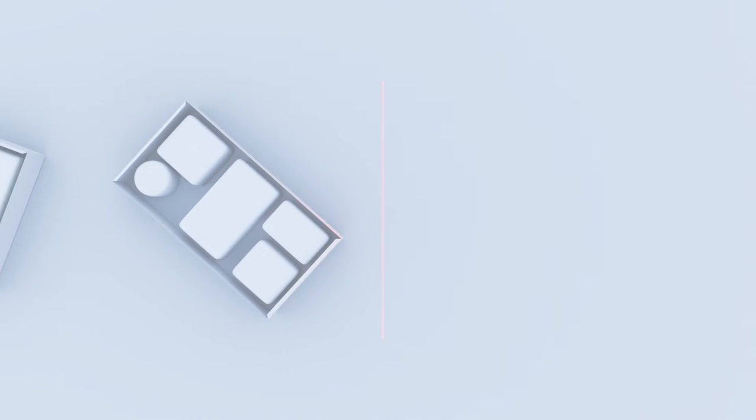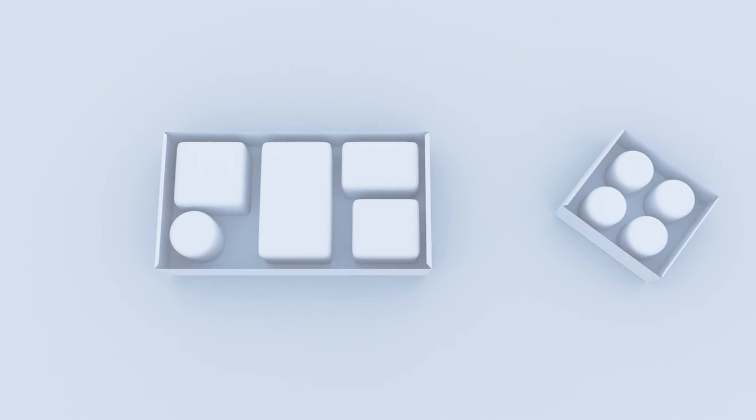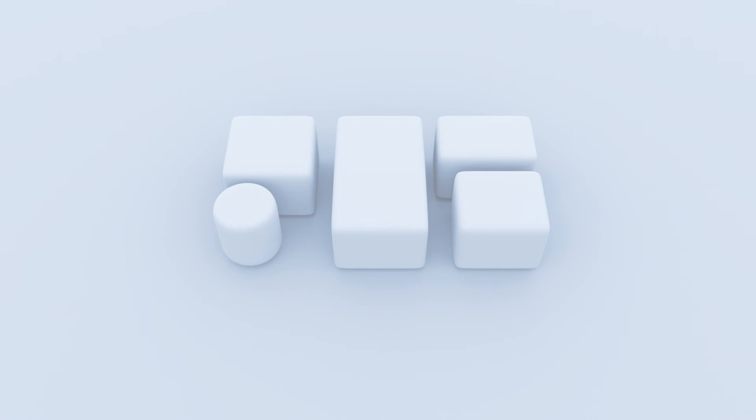It easily finds, counts and positions objects no matter what shape, color or orientation the products come down the line. Area and volume measurement are available as well as intensity data for label detection.